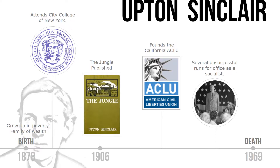In 1906, Sinclair published The Jungle. In the late 1920s, Upton founded the California Chapter of the ACLU. Sinclair made several failed attempts at running for elected office as a socialist. Sinclair died in 1969.